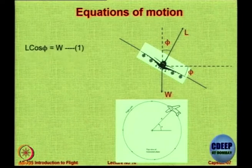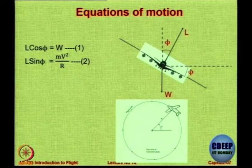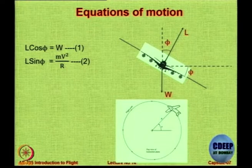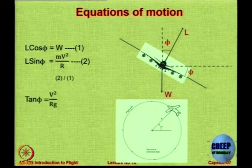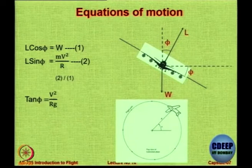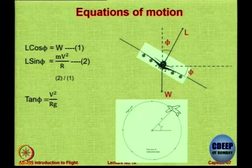L cos phi will be W — that is our first equation — and L sin phi will be mv² by r, which is the centrifugal force acting on it. We take a ratio of these two equations and you will get tan phi = v² / gr. So if you want the angle phi to be small, let your speed be small or let your r be large.